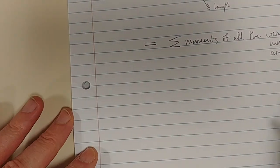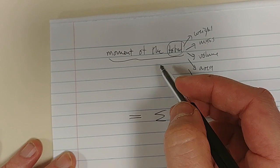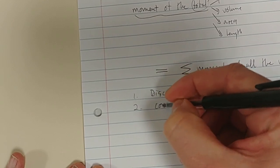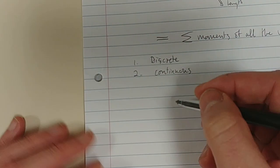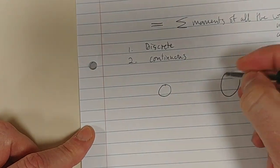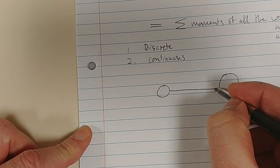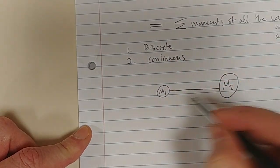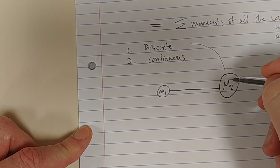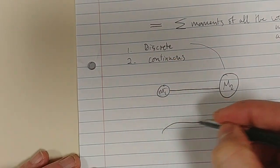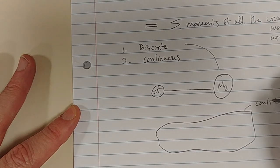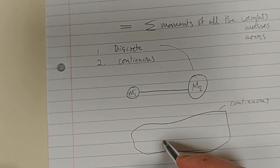We can determine the center of gravity, center of mass, or centroid of: number one, discrete particles; or number two, continuous particles. A discrete particle is if you've got, say, a mass here and a mass there connected together, and we're trying to find their center of mass. These are discrete — one particle separated from the other. The second case is a continuous mass, like a ruler — it's a continuous system.